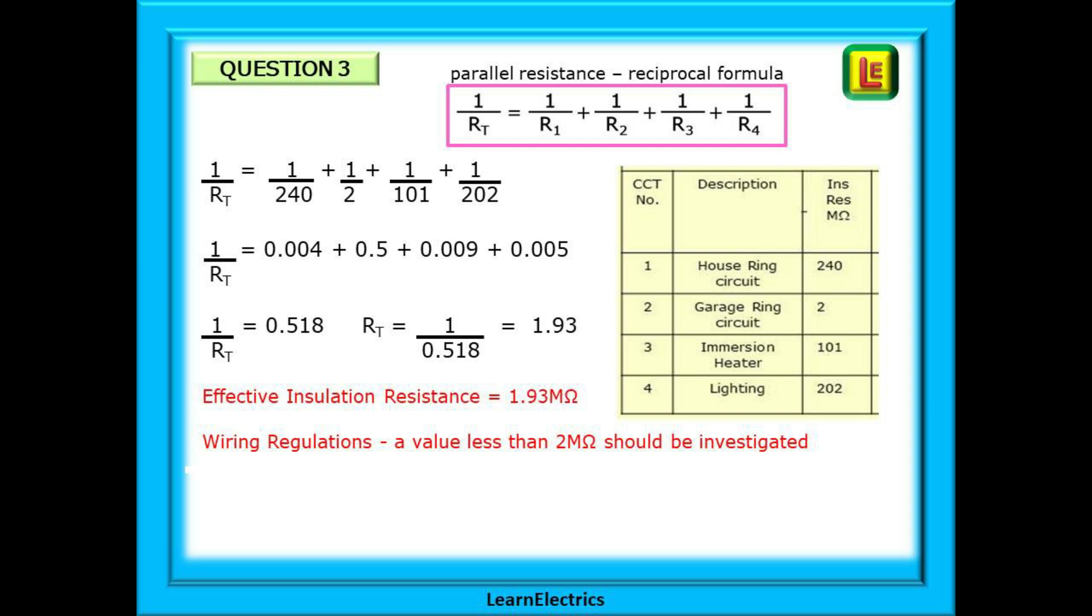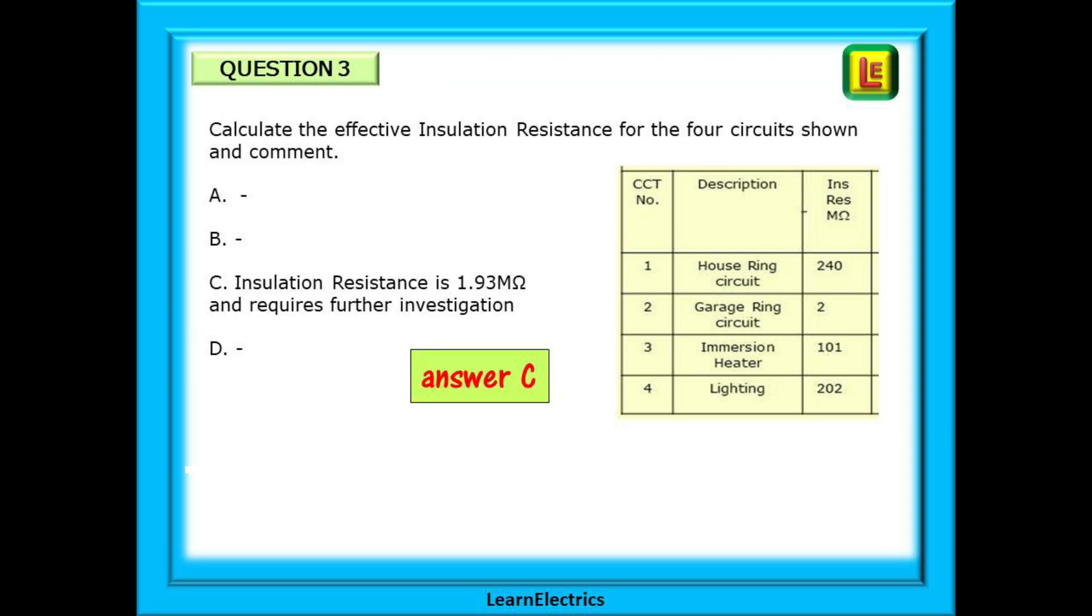The wiring regulations state that if the effective insulation resistance of the installation is less than 2 mega ohms then further investigation is required to establish the reasons for this low reading. So you should choose answer C. 1.93 mega ohms and requiring further investigation.